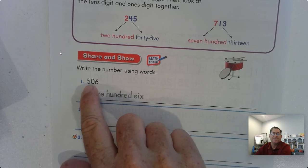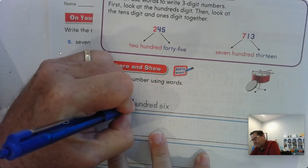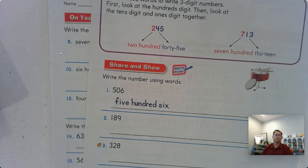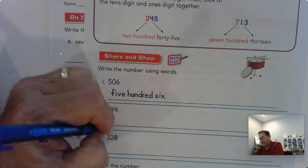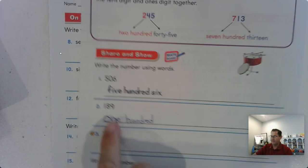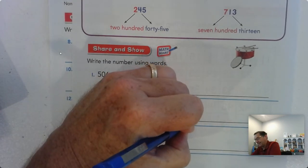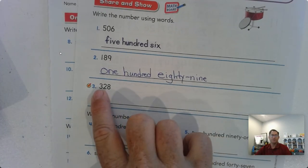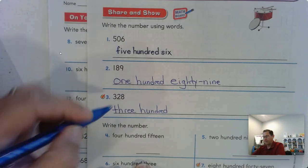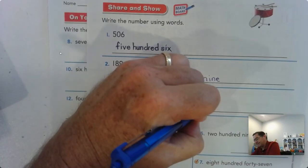Write the number using words. Five hundred six. We can just write five hundred six. How about this one? Let's look at the hundreds place. We have 100. So we know that the first part's 100, and then look at the eight and nine together, and that's 89. How about this one? Look at the hundreds first. We have 300. And now look at the two and the eight together. That's 28. So 328.